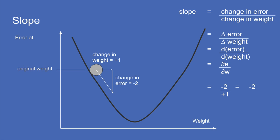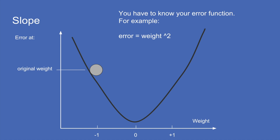For example, if we change the weight by plus one and the error changes by minus two, that gives us a slope of minus two — telling us the direction we should adjust our weight to bring the error down. To do this you need to know your error function. Assume an error function that's the square of the weight, and our weight is at minus one. We take the derivative dE/dW; the derivative of W² is 2W, so we plug in minus one and get a slope of minus two.